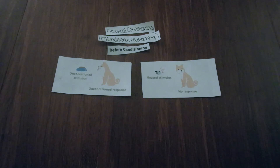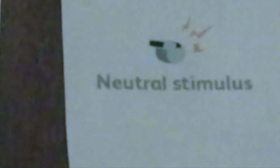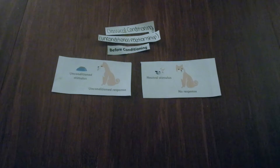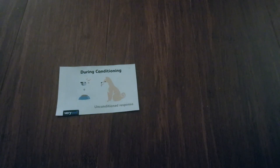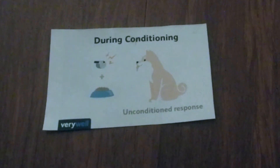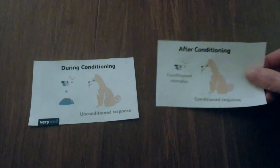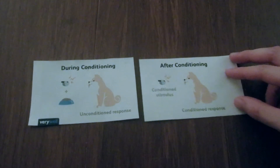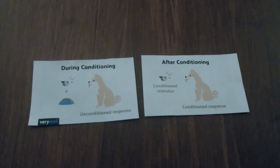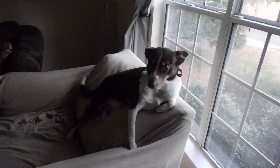He then introduced the neutral stimulus, which is the sound of the bell. Before conditioning, the bell would elicit no response. During conditioning, both the neutral stimulus — the bell — and the unconditioned stimulus — the food — are both introduced to the dogs, which then induces the unconditioned response of salivation. Over time, as the conditioning is repeated, the dogs learn to associate the sound of the bell with food, and would naturally start to salivate when the bell alone is rung.